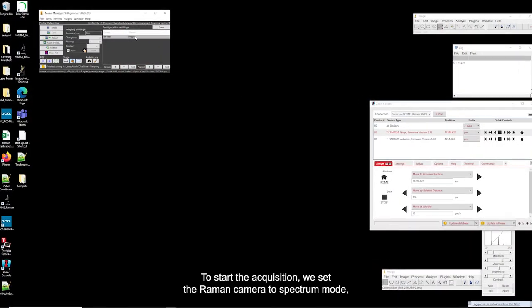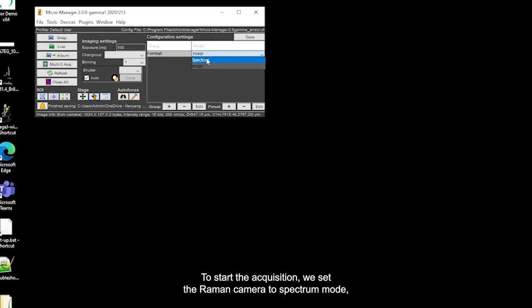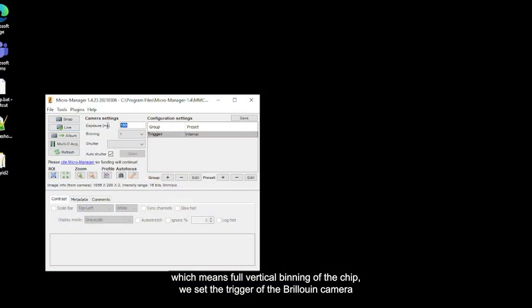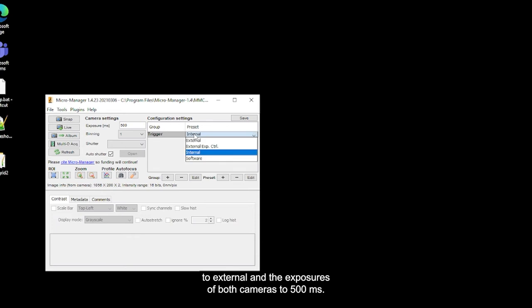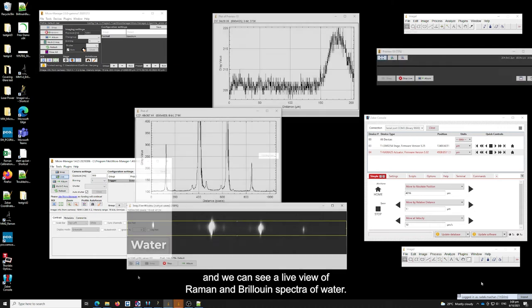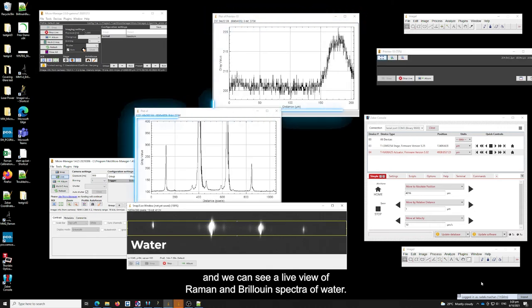To start the acquisition, we set the Raman camera to spectral mode, which means full vertical binning of the chip. We set the trigger of the Brillouin camera to external, and the exposures of both to 500 milliseconds. Then, we start the live acquisition, and we can see a live view of Raman and Brillouin spectra of water.